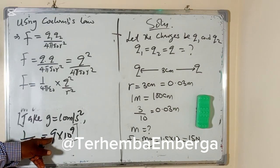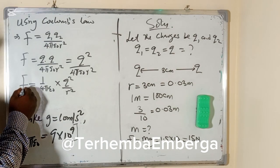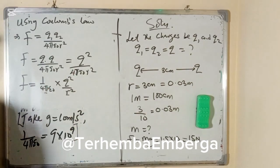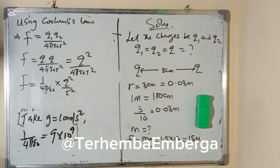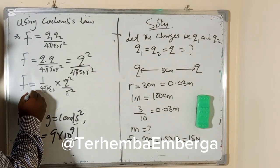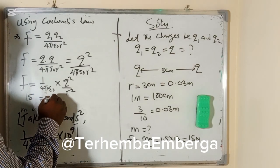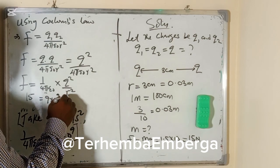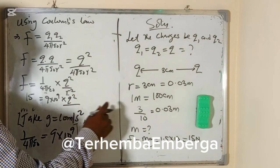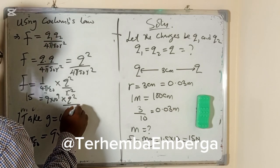We know the value of r squared, we know force, we know the constant, so we can calculate Q squared. We can say that F, which is 15, is equal to 9 times 10 to the power 9 times Q squared all over 0.03 squared.